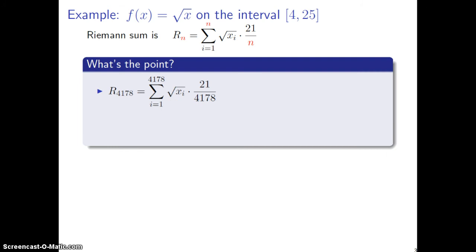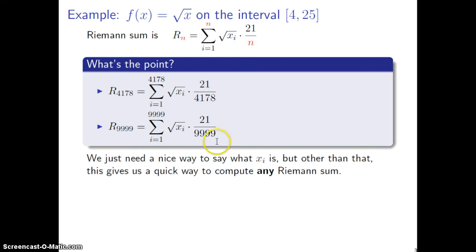And let's say you're asked for R_9999, same thing, you can just go here and replace all of these n's with 9999. So R_9999 is now just a sum of 9999 terms which look like this, so I just plugged in for each of these. This is a very quick process.